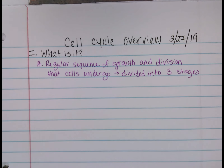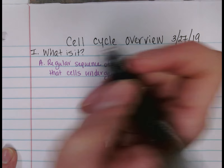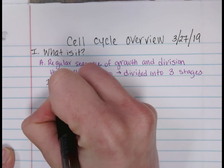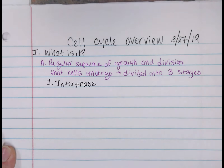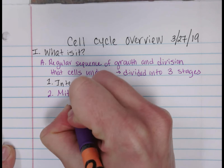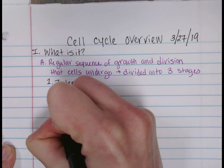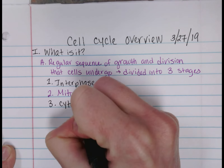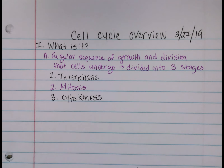By 'regular sequence' it means it's constantly occurring in your body — all over your body those cells are growing and dividing. But not just in your body; bacteria undergoes that, plants, animals — it's a regular sequence, it's frequently going on. And those three phases are: one is interphase, two is mitosis, and three is cytokinesis.